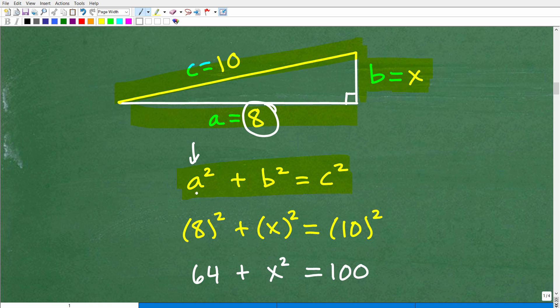and then we're going to add that to B squared. So what's B? Well, B is equal to x, so that's going to be x². And that's going to be equal to c², which of course is 10².